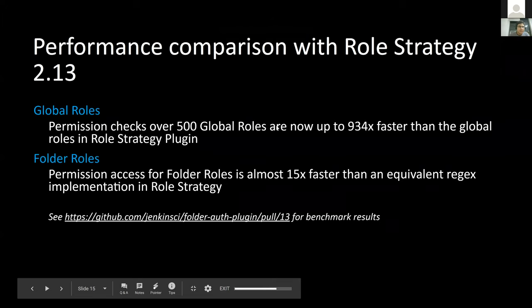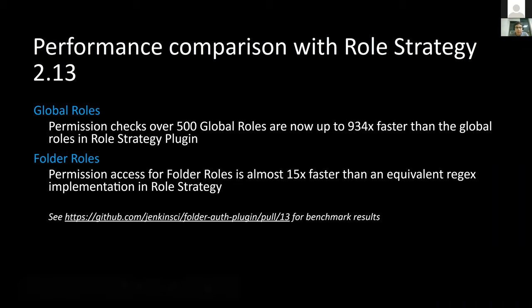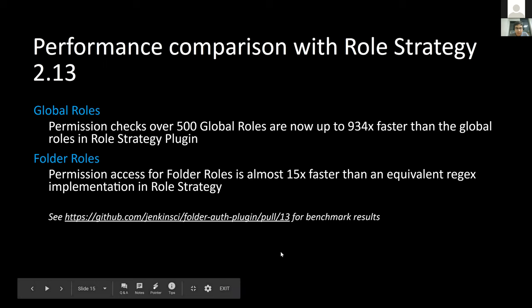Let's compare the performance of the Folder Authorization plugin with Role Strategy plugin 2.13, which contains the performance improvements discussed earlier. For global roles, in a test case of about 500 roles, the Folder Authorization plugin is about 934 times faster than Role Strategy plugin for permission checking. For folder roles, the equivalent regular expression-based configuration is about 15 times faster. You can see the GitHub pull request for the full benchmark results.